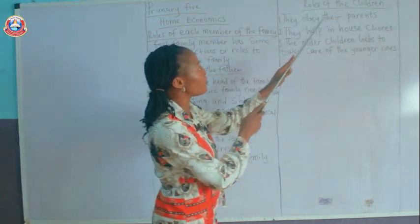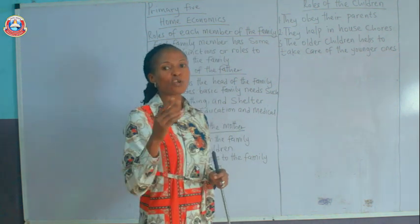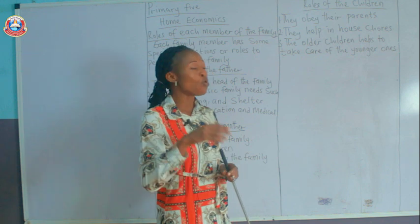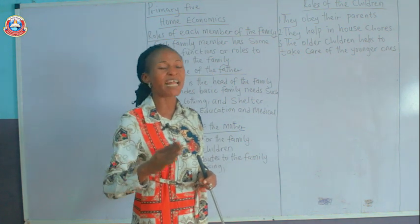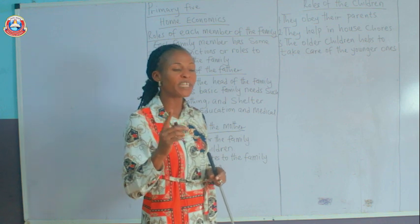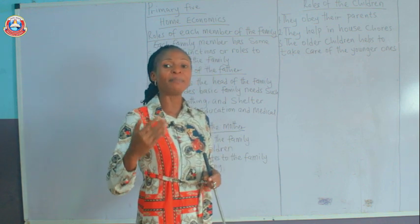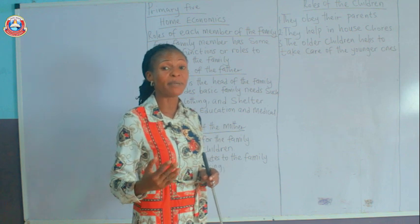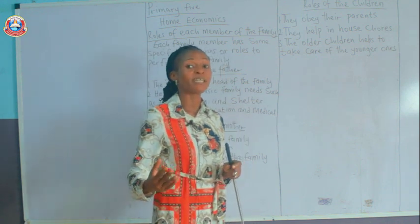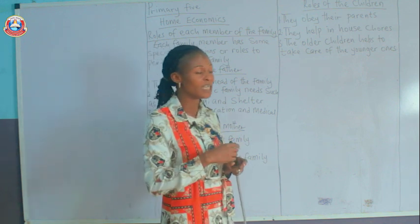Now we move to the roles of the children. As a child in the family, you also have some role to play. Number one, you obey your parents — children are to obey their parents. Obedience to their parents is very necessary. They also bear the family name. The children bear the family name; you don't leave your family and go and answer another person's family name. So it is the role of the children to bear the family name.